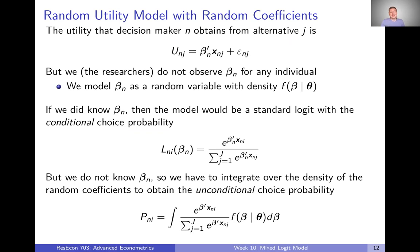The problem is that if the utility a decision maker obtains depends on an individual-specific set of coefficients, we the researchers don't actually observe that beta sub N. We don't actually observe preferences for each individual. Theoretically it's possible if we observed lots of panel data for each individual, but in general we assume we are not able to identify an individual-specific set of coefficients for each person in our data.